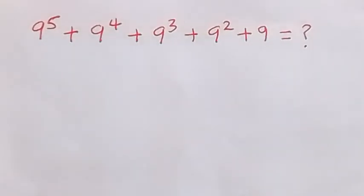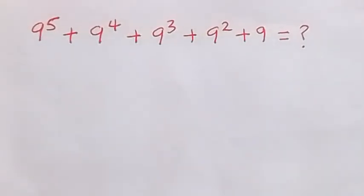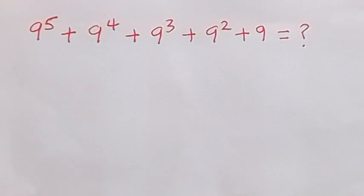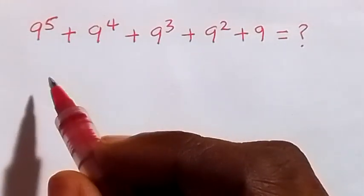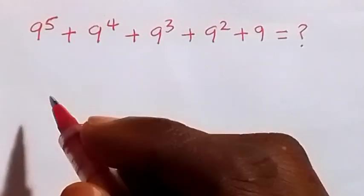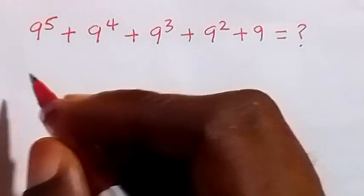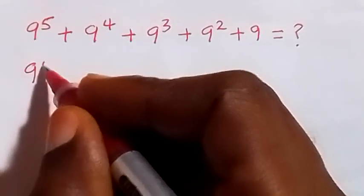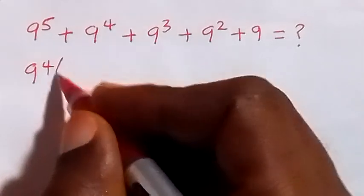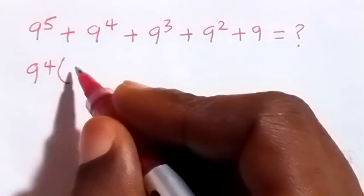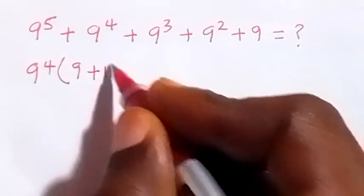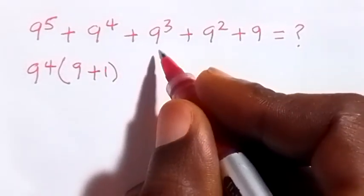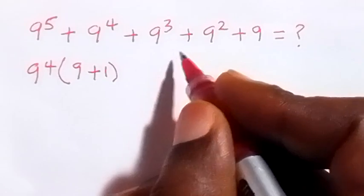Hello, you are welcome. We are going to solve this nice Olympiad expression, simplifying without using a calculator. From here, let's factor what is common between these two. We have 9 raised to power 4 common here, then what will be left is 9, then we have plus 1 left here.